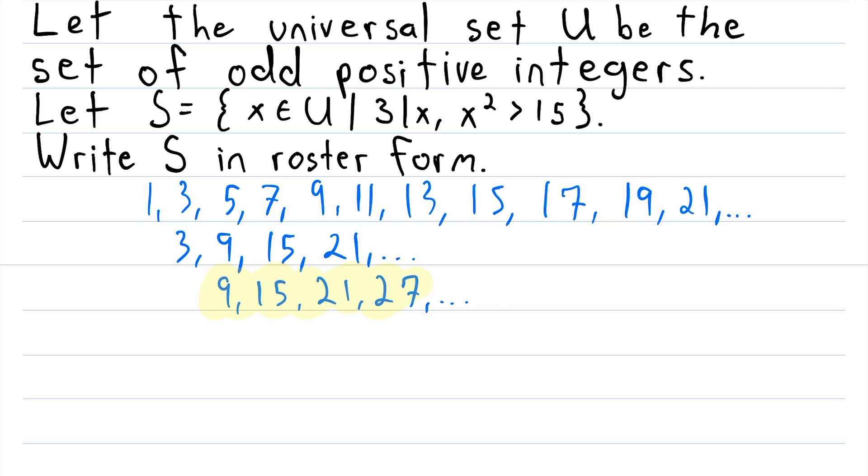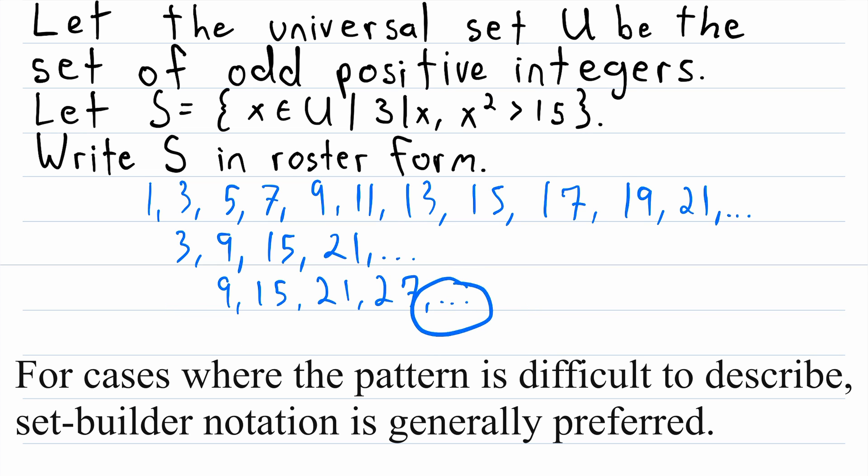I want to point out that identifying the pattern in your list of numbers is important. Because remember, the ellipsis indicates that a pattern continues. So if there's no discernible pattern in your list, it doesn't make any sense to use the ellipsis. So if you're going to use an ellipsis to indicate that a pattern continues, you need to be sure that there is a pattern, and in general it should be a pretty obvious pattern.